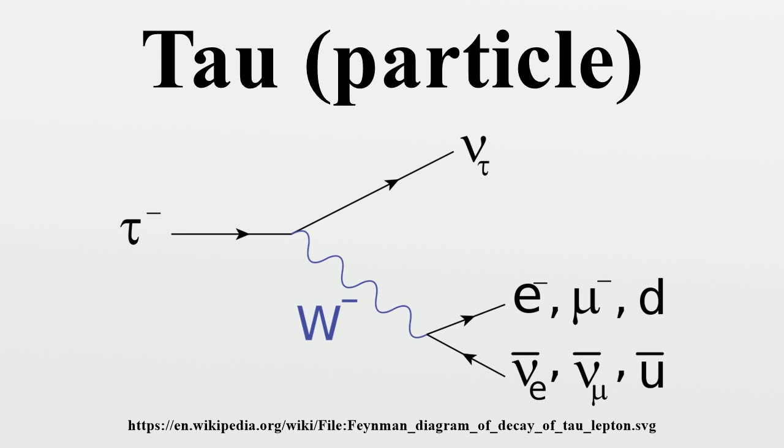Exotic Atoms: The tau lepton is predicted to form exotic atoms like other charged subatomic particles. One such atom, called tauonium by analogy to muonium, consists of an anti-tauon and an electron: tau+ e-.